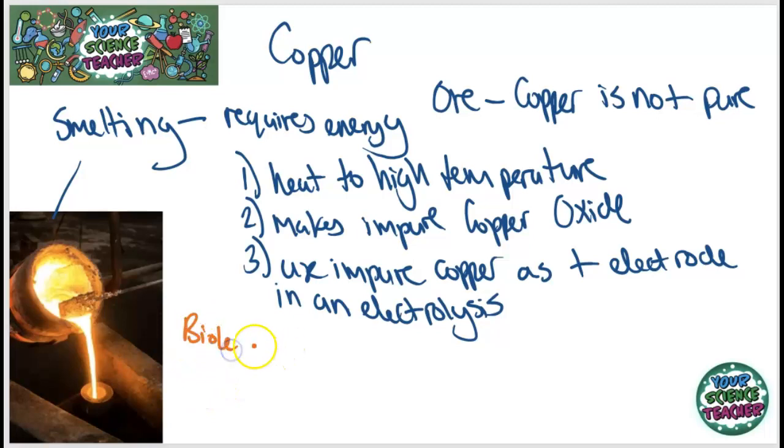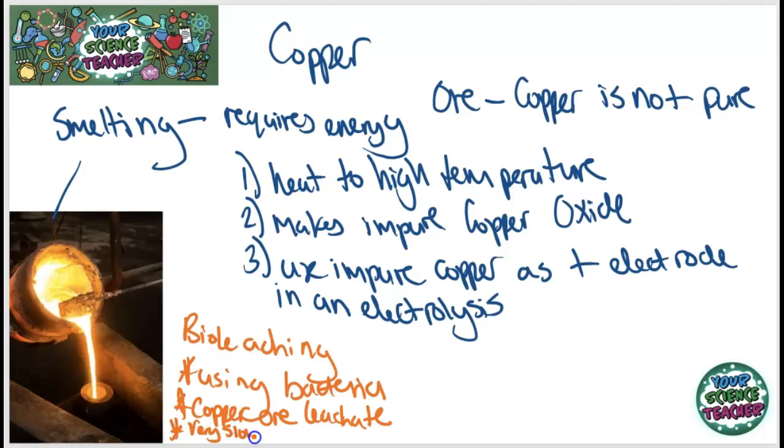And one of them is bio leaching, and basically this is using bacteria to extract the copper. And the bacteria will grow around the copper ore and they produce something called leachate, and then electrolysis is carried out on this leachate to produce pure copper. Now unfortunately bio leaching is very slow and can take lots of years for all these bacteria to carry out the job because it's a variety of different chemical reactions that need to take place.